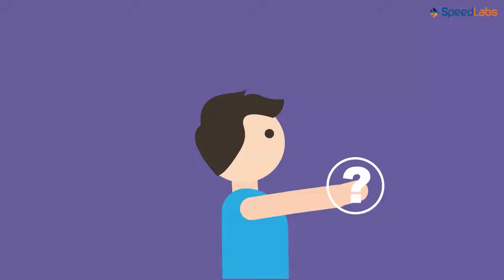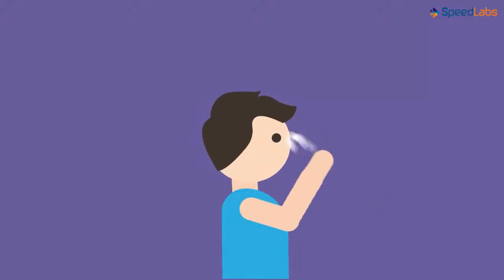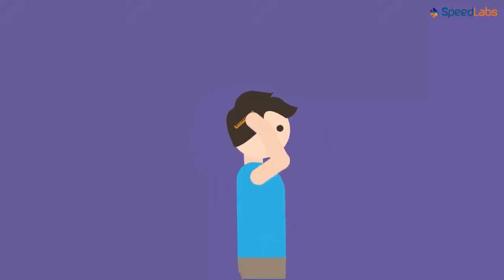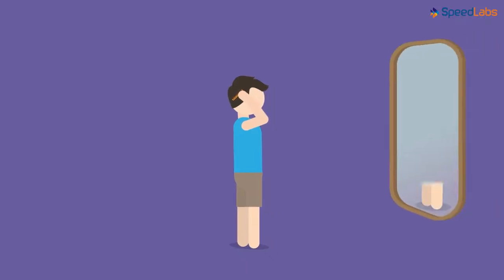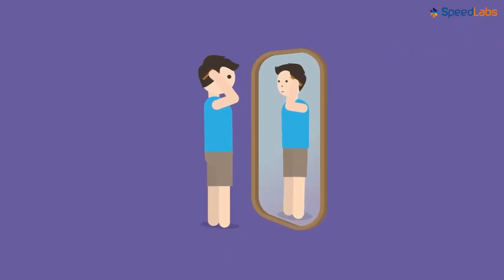Which tool do we use to comb our hair? It's a comb, yes. That's correct. But we also need a mirror for that. When we stand in front of a mirror, we see the duplicate of ourselves in it. We say that this is our image.